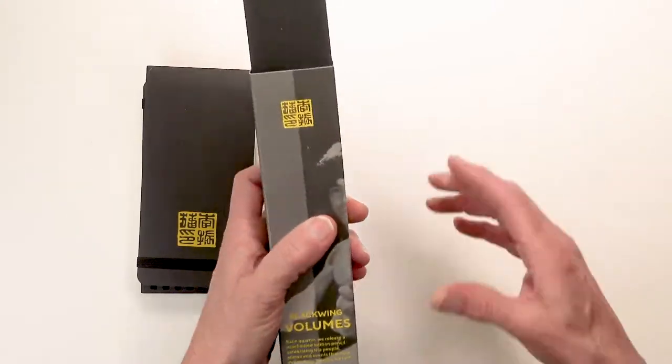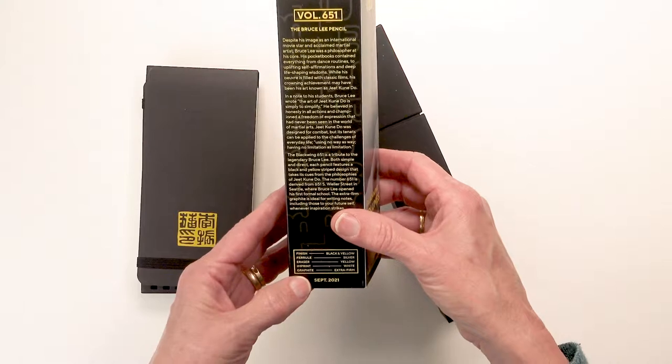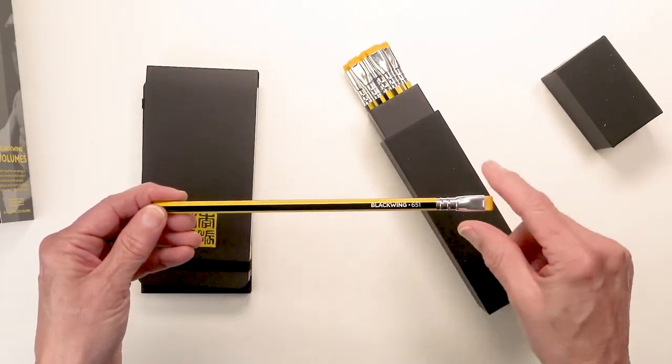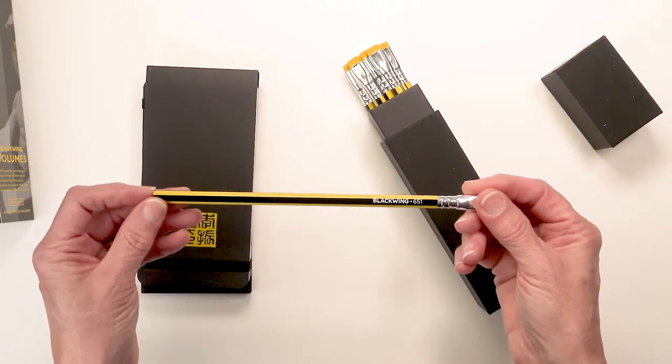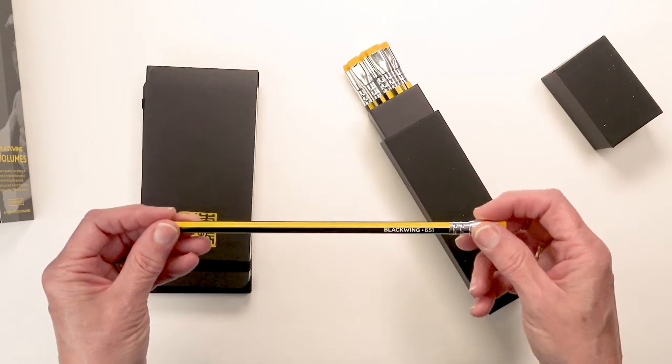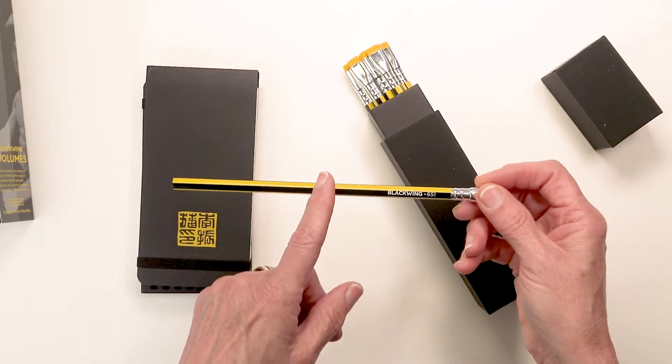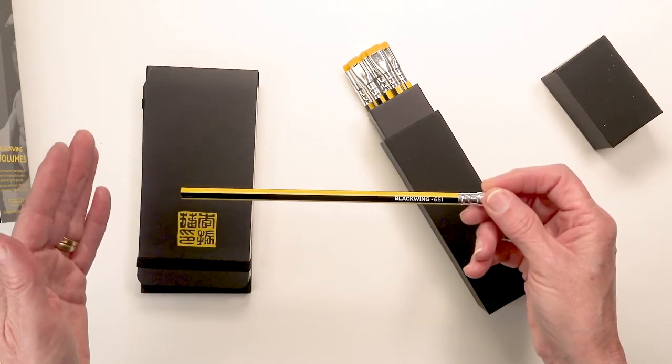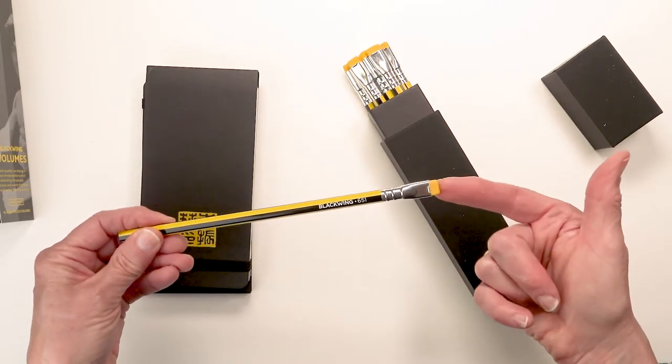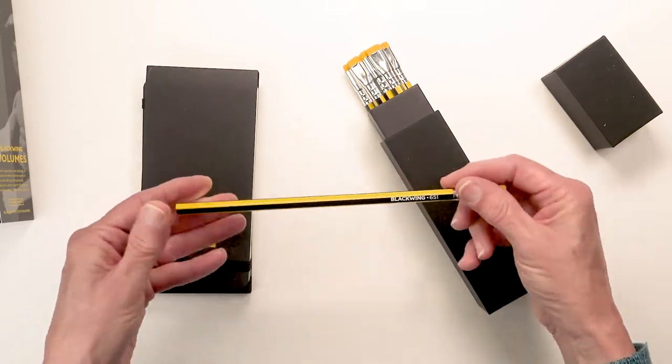So let's take a look at the pencils. They are filled with an extra firm lead. I really like the extra firm graphite that comes inside these pencils. It's wonderful on paper, holds a point well, and when I'm marking with graphite on fabric, I like both the firm and the extra firm graphite the best. This pencil is black and yellow striped. It comes with a yellow eraser, which is really pretty, and it has a silver ferrule.